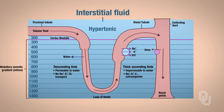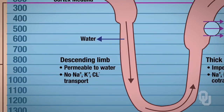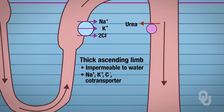By having the interstitial fluid hypertonic, that forces water to be reabsorbed — we've created an osmotic gradient for water. In the descending limb, which is only permeable to water, water moves out of the lumen into the more hypertonic interstitial fluid. The ascending limb is only permeable to solutes, not to water.